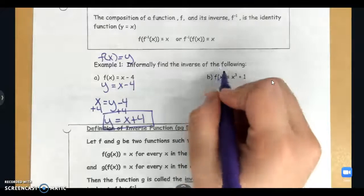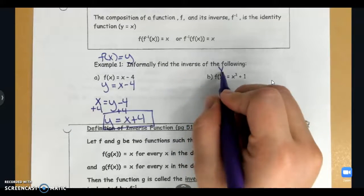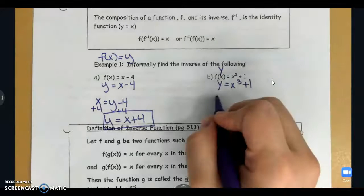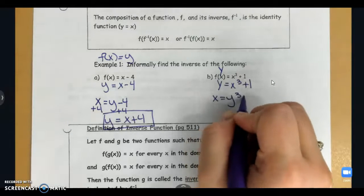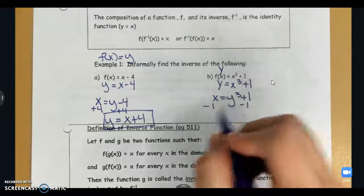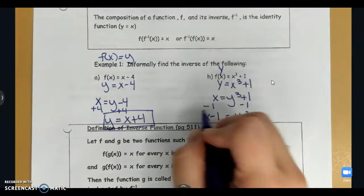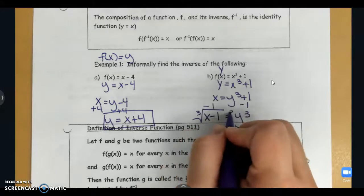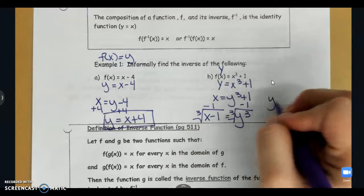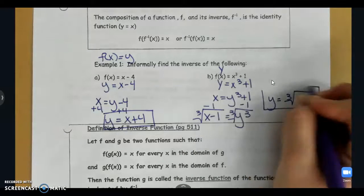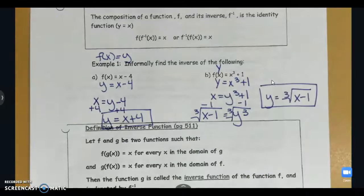Same thing over here. Remember f of x is y. So y equals x cubed plus 1. I'm going to swap my x's and my y's and then get y by itself. So x minus 1 equals y cubed, and then you cube root both sides. So cube root of x minus 1. Those are the inverses from example 1.